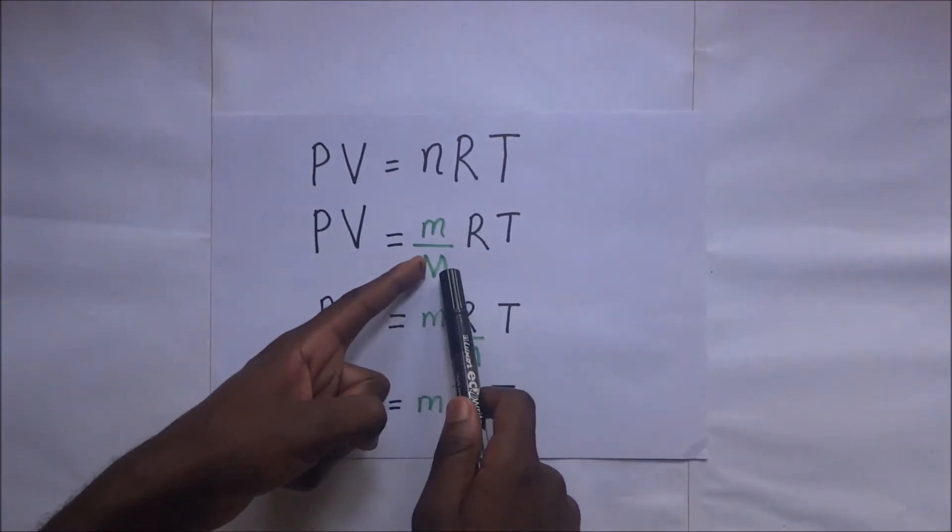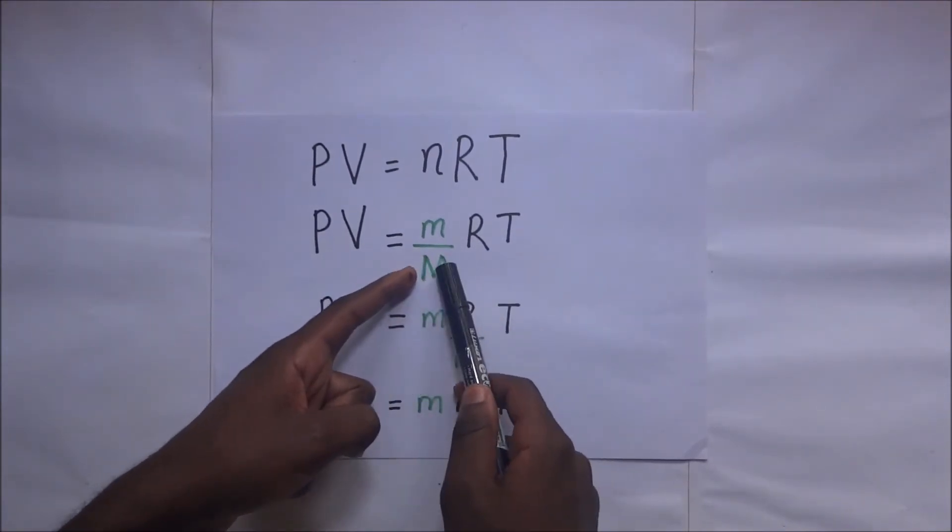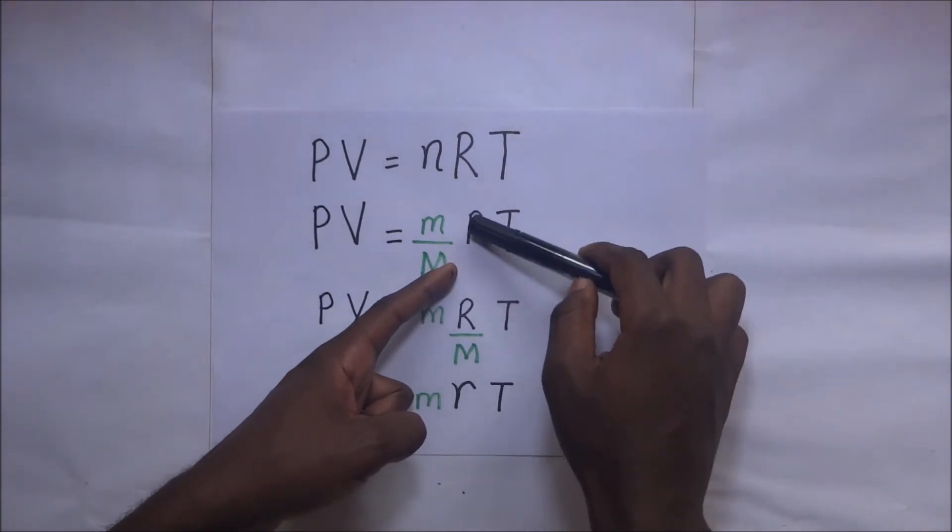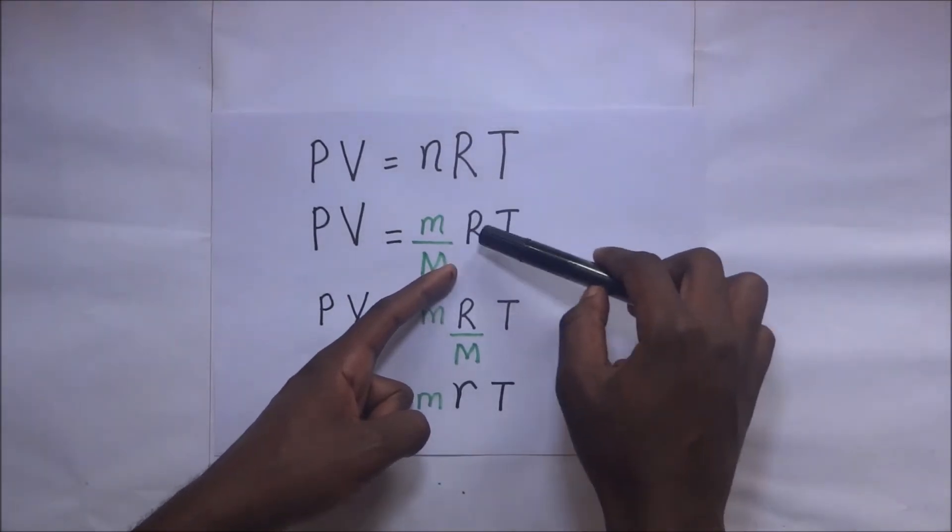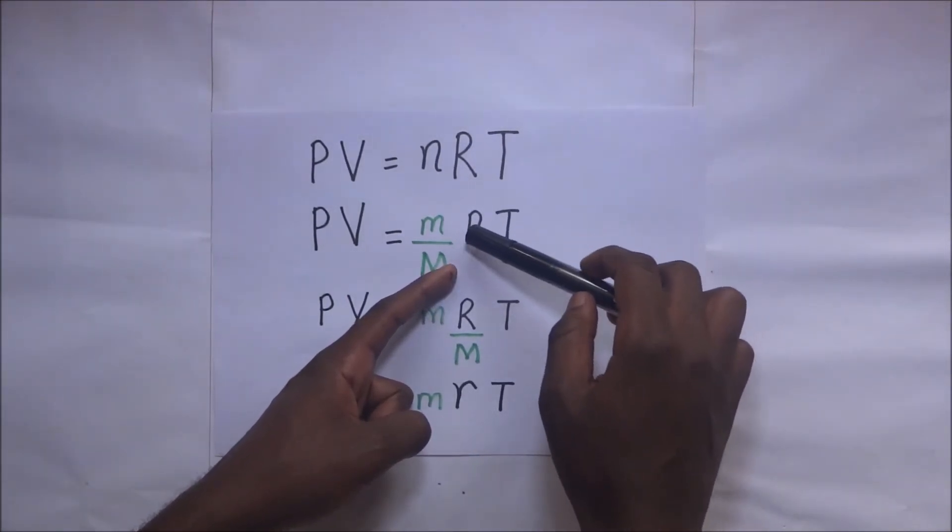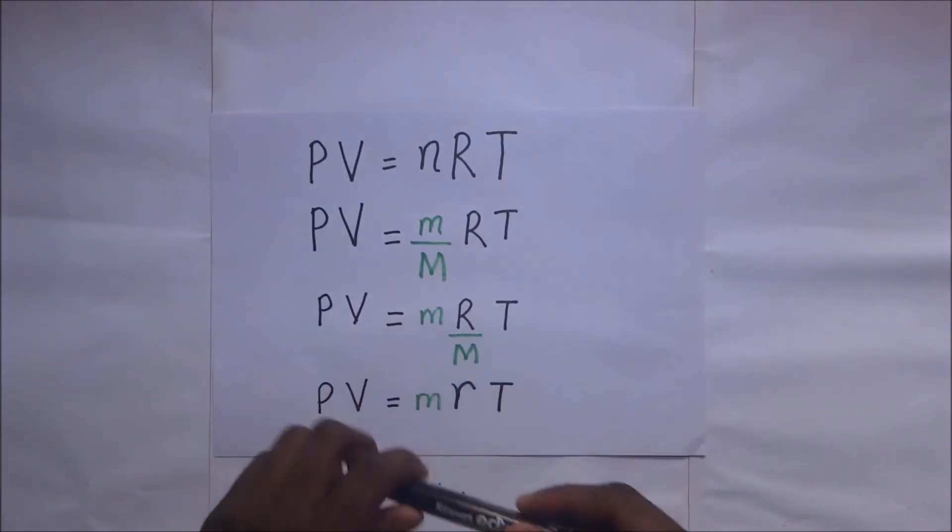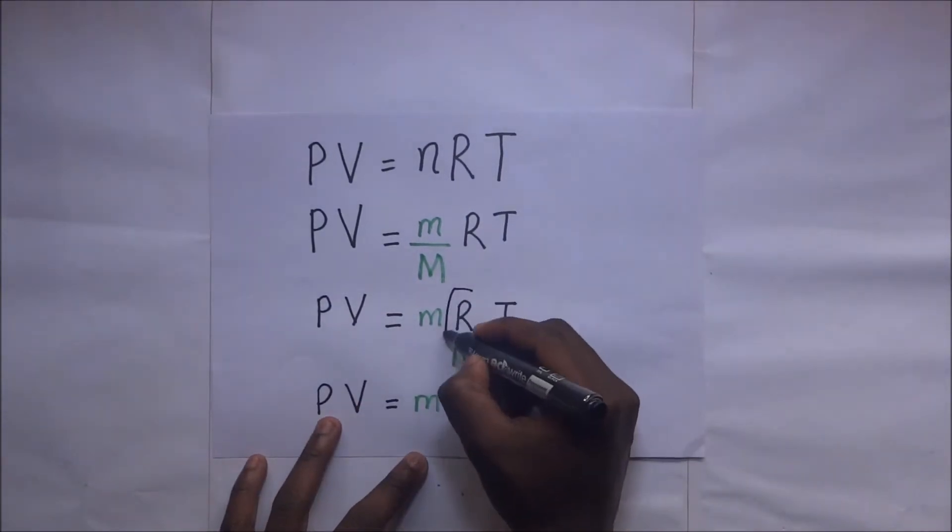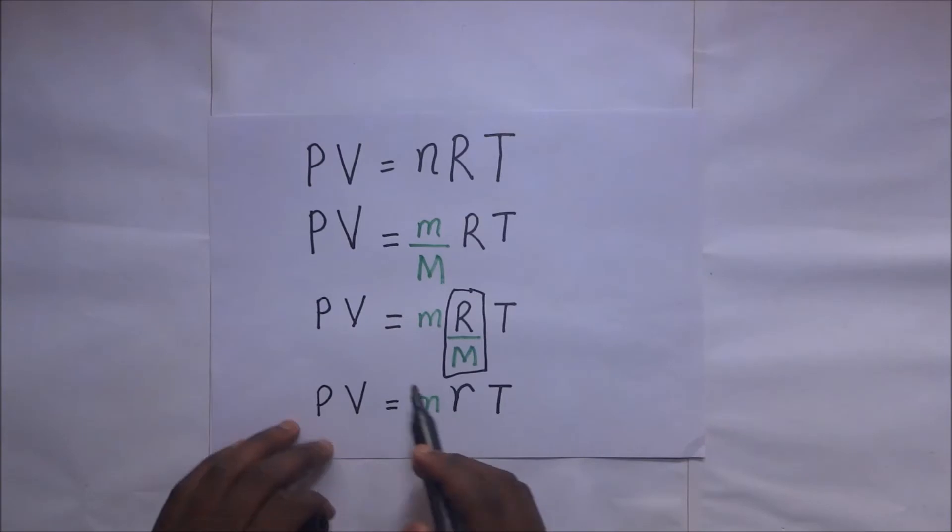So instead, we shift this value of M, the relative molecular mass, and put it below R, the molar gas constant. We start getting a new expression here. This becomes PV...